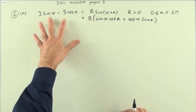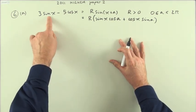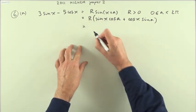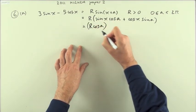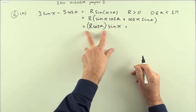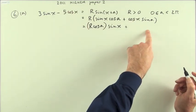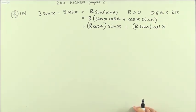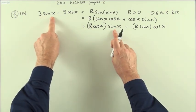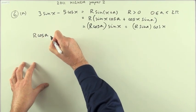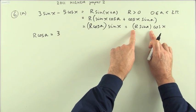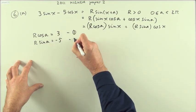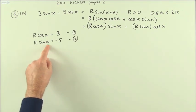If these two expressions are meant to be the same, everything on one side must be replicated on the other. So if on this side I've got three lots of sine x, the coefficient of sine x is r cos a. Similarly, the coefficient of cos x must match, giving r sine a. That gives two equations: r cos a equals three, and r sine a equals negative five.